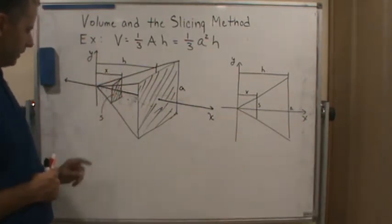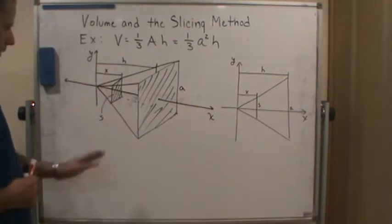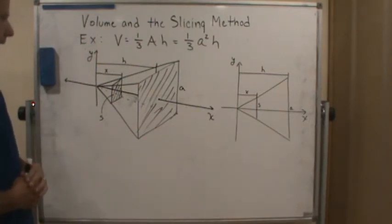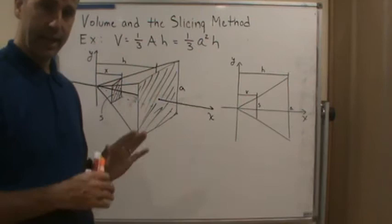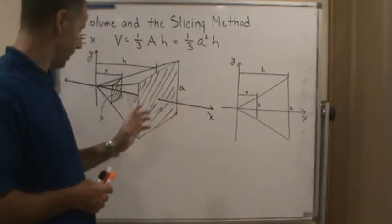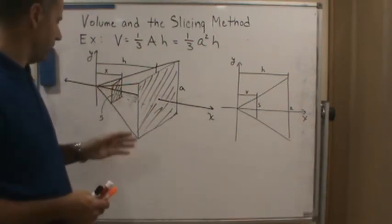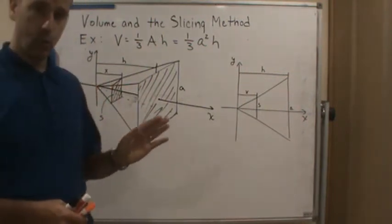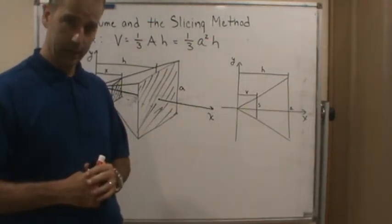And so this slice is called s, and the length of one of the sides is s for the slice. And so now since the base is a square, then every cross-section done this way will also be a square. So now we just need to figure out what is the area of each one of those squares.